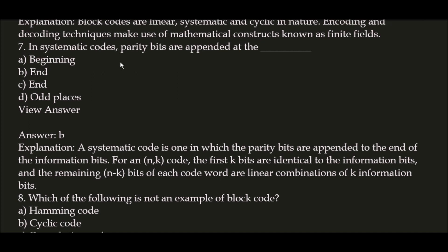Next question: in a systematic code, parity bits are appended at the? The correct answer is option B — end. In a systematic code, parity bits are appended to the end of the information bits. The first k bits are identical to the information bits, and the remaining n minus k bits of each code word are a linear combination of k information bits.